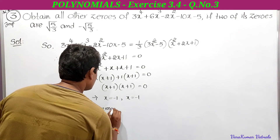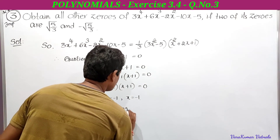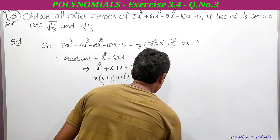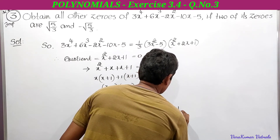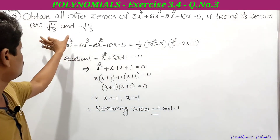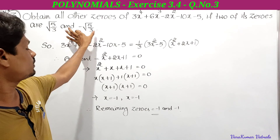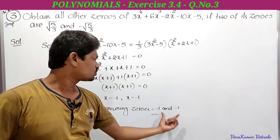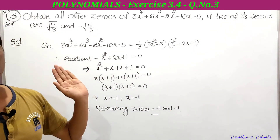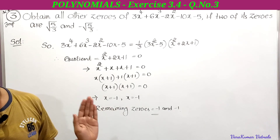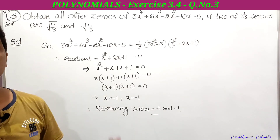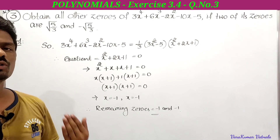Therefore the remaining two zeros are -1 and -1. Since the degree of the given polynomial is 4, it has at most 4 zeros: two zeros are √(5/3) and -√(5/3), and the other two zeros are -1 and -1. This is how we find the remaining zeros. Practice this and follow the steps — it's a very important problem. That's all for today's class; we'll meet in the next class with the fourth problem. Thanks for watching.